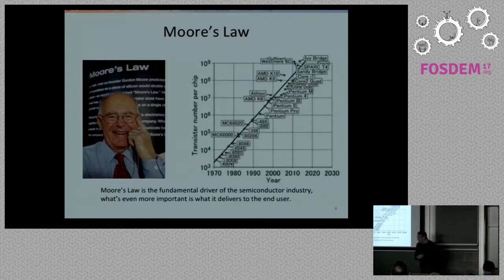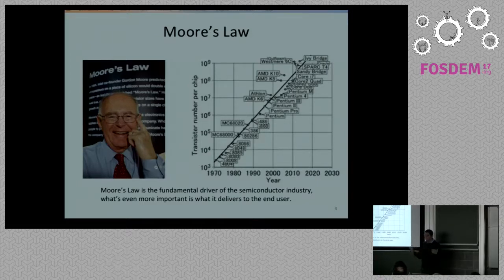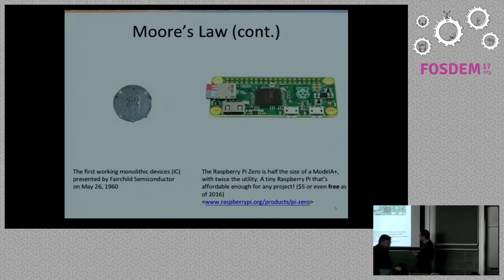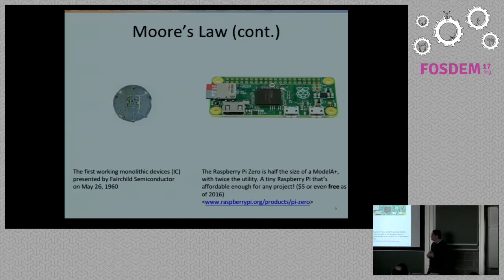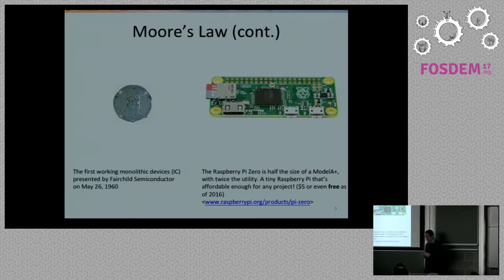You might be aware of Moore's Law, which is the realization by one of the founders of Intel that roughly every two years the number of transistors in a chip doubles. This has driven the industry for quite some decades. Going back in time, one of the first monolithic ICs in the 60s by Fairchild had basically four or five transistors — it's a flip-flop. But nowadays, a Raspberry Pi has billions of transistors, and you pay about $5 for the whole thing including PCBs. That makes hardware really accessible for all of us.